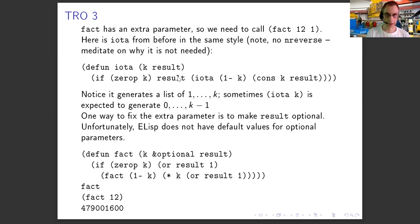Similarly, I could do the iota function — if you remember, we used iota to generate a list of numbers from one to N or from zero to N minus one. I can do the same thing in a tail-recursion-optimizable way by passing in the result parameter, which initially is the empty list. It keeps adding to that list and eventually returns it when the recursion is finished.